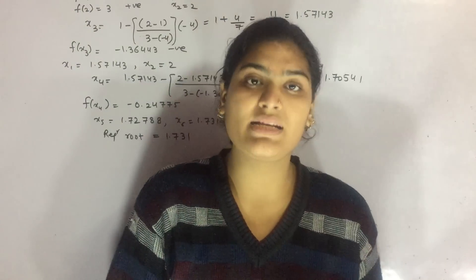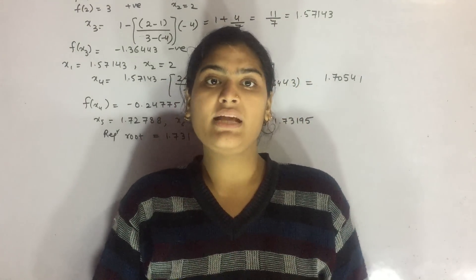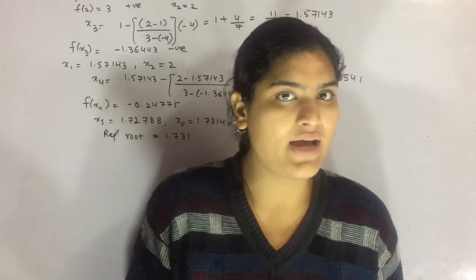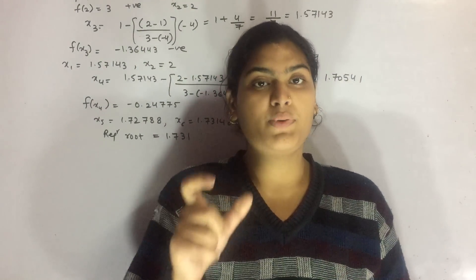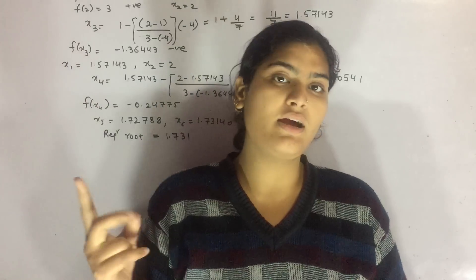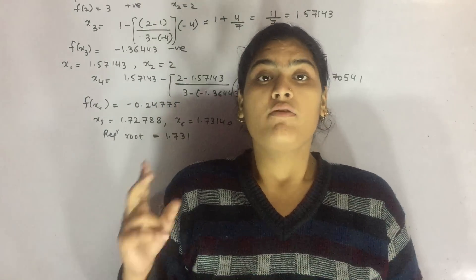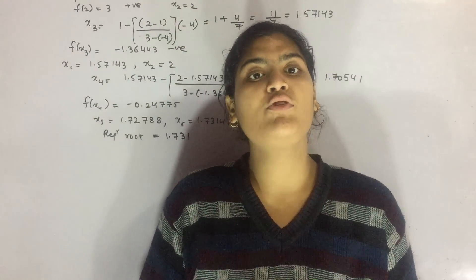The Regular Falsi method has similarity with the bisection method. You have to take two values by hit and trial method for which the function comprises of one positive and one negative value. When you find this, then you have to find out the third value.